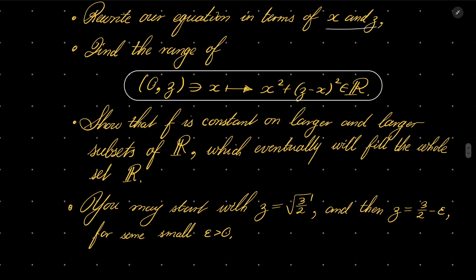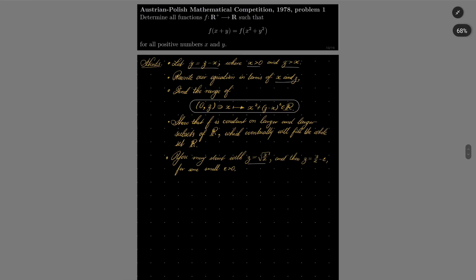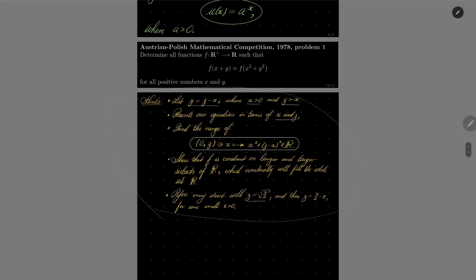You may start by first choosing z to be square root of 3 over 2, and then z equals 3 over 2 minus epsilon, for some small epsilon. So give this problem a try, and I will see you in just a minute.